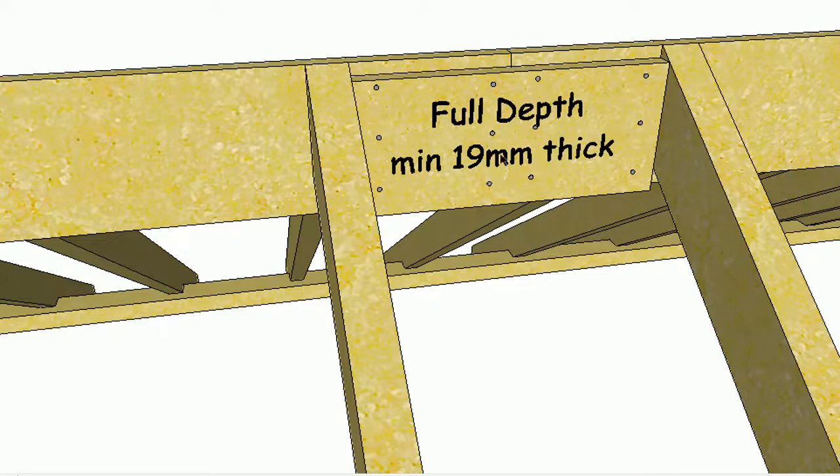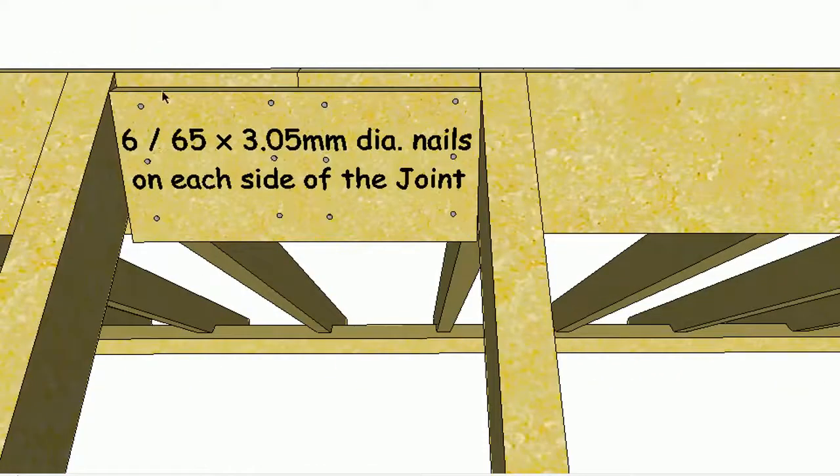And a minimum of 19mm thick is the requirement in the timber framing code. And it also needs to have six 65 by 3.05mm diameter nails on each side of the joint. So six on this side, six on this side.